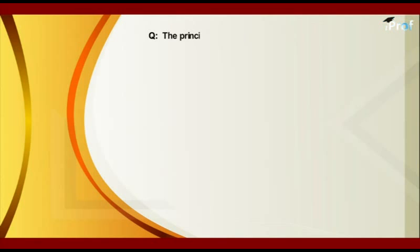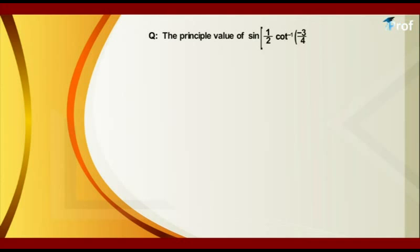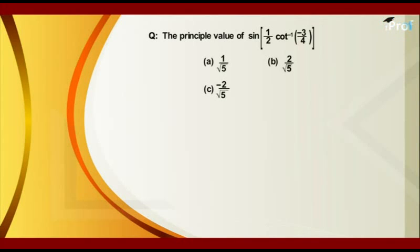Our question is to find the principal value of sin of one-half times cot inverse of minus 3 upon 4. The choices are: 1 upon root 5, 2 upon root 5, minus 2 upon root 5, and minus 1 upon root 5.